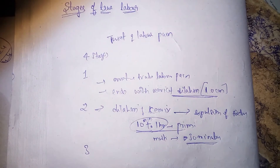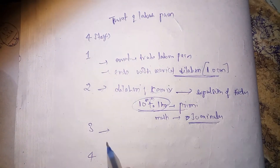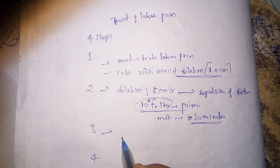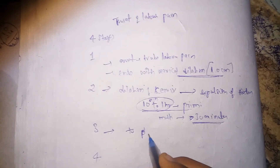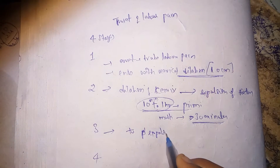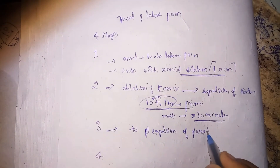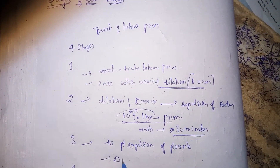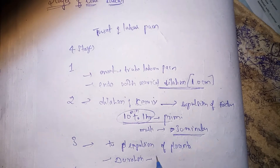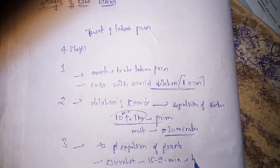The third stage of labor begins with expulsion of the fetus to expulsion of the placenta. The duration is 15 to 25 minutes, and this is the same in both primigravida and multigravida.